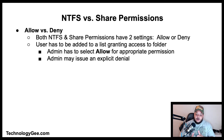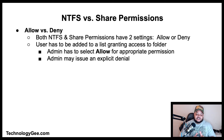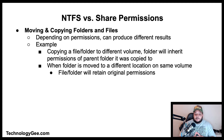Next we have Allow versus Deny. Both NTFS and share permissions each have two settings: Allow or Deny. If a user wants access to an object such as a folder to perform certain tasks, the user has to be added to a list granting access to the folder, and then the admin would select Allow for the appropriate permission. In some instances, an admin must issue an explicit denial if the user is part of a larger group that already has access to a parent folder but needs to be kept out of a particular sub-folder.